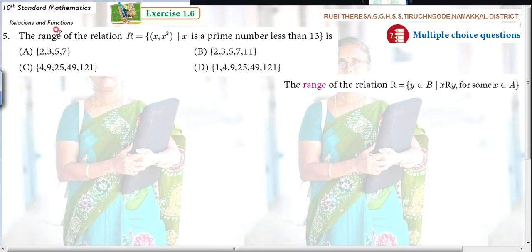Listen here, the range of the relation R equals (x, x²) such that x is a prime number less than 13. They have given 4 options. Actually, what are they asking? The range of the relation is what?